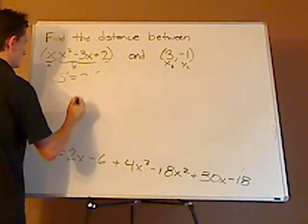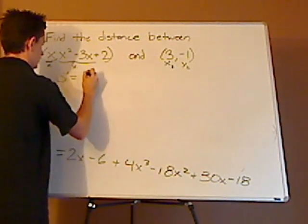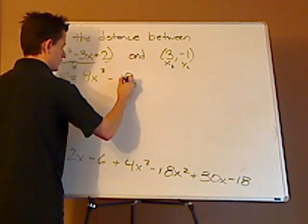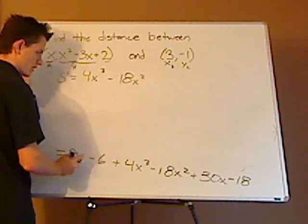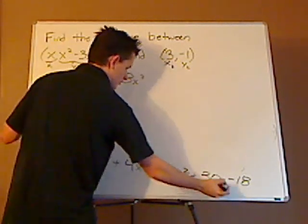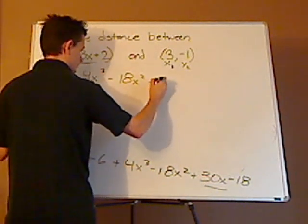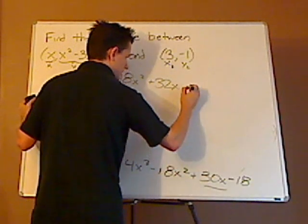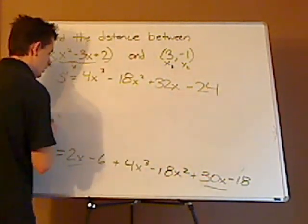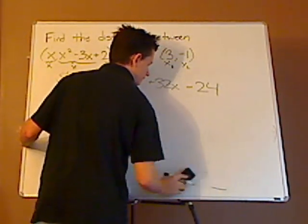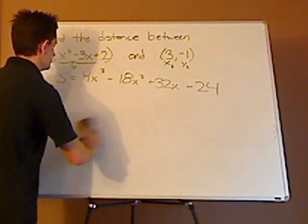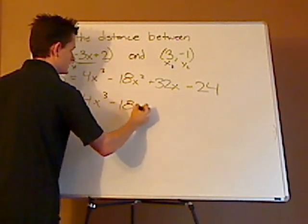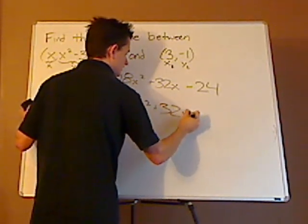So that will be 4x cubed minus 18x squared. You're going to add the 2x here plus this, 2x plus the 30x gives you 32x, and then negative 6 minus 18 gives you negative 24. Now the zeros are going to vary, because you have to set this equal to 0, and you have 4x cubed minus 18x squared plus 32x minus 24.